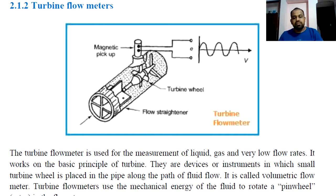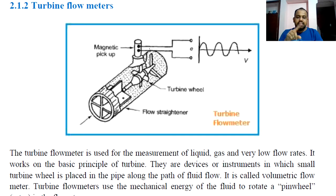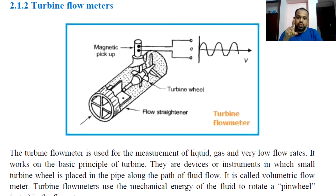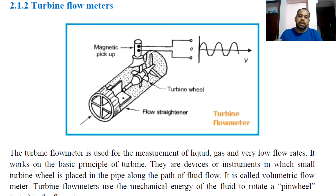On the outside pipe, there is a magnetic pick-up. The turbine wheel rotates as fluid flows, and the blades pass by the magnetic pick-up coil, producing signals proportional to the speed. That is the basic principle.